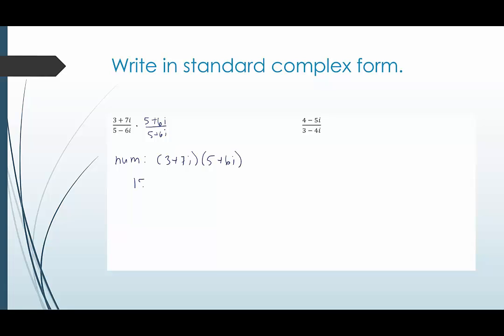This would be 3 plus 7i times 5 plus 6i. This would give me 15 plus 18i plus 35i plus 42i squared. Now this is going to end up becoming, i squared is negative 1. So this will become minus 42.